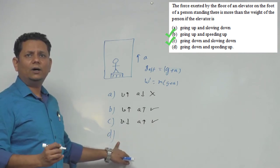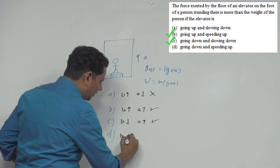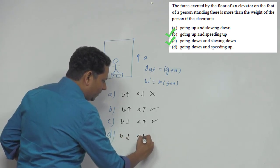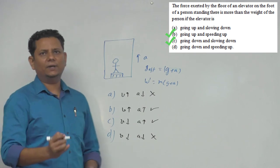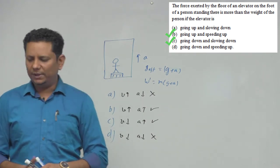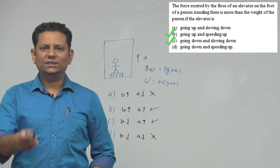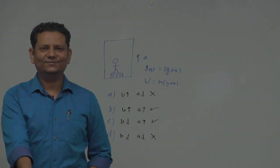Fourth option is going down and speeding up, so your velocity is speeding up in the downward direction, then acceleration is also downward. Hence this option is not correct. Hence we can say options B and C would be the correct choices for this problem.